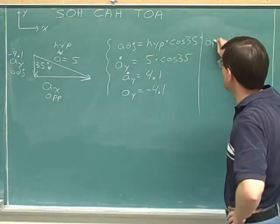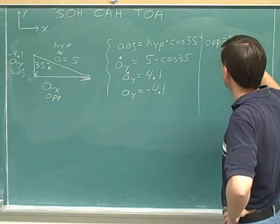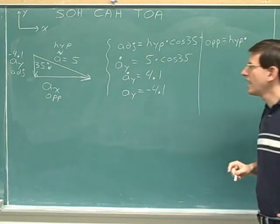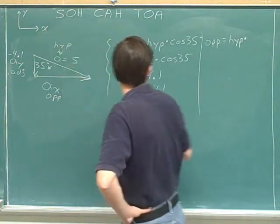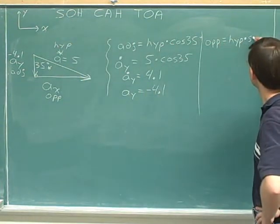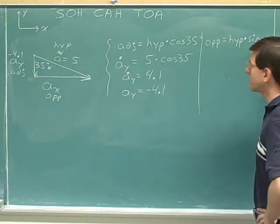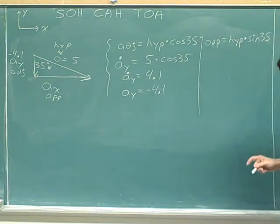Moving on to the opposite side, which we haven't figured out yet. We know we want to use the hypotenuse because that's the sign we're given. And so, the opposite side comes from the hypotenuse and the sine. The sine of 35 degrees.